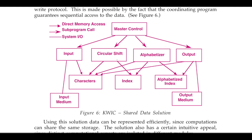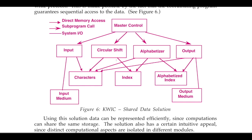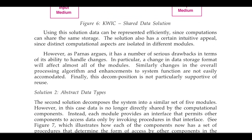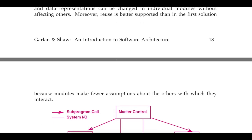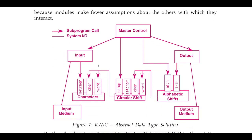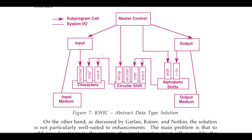Then they went to a more object-oriented approach where data was abstracted using interfaces. Here we have input, output, and master control, but the data is represented by interfaces. You have set, car, word for circular shifts, and alphabetic shifts are also represented by interfaces. The benefit of this approach is that data is abstracted.